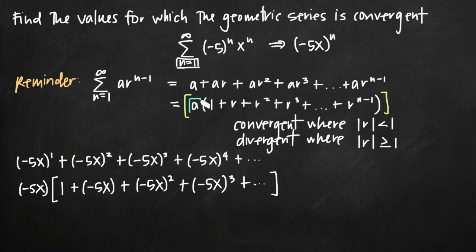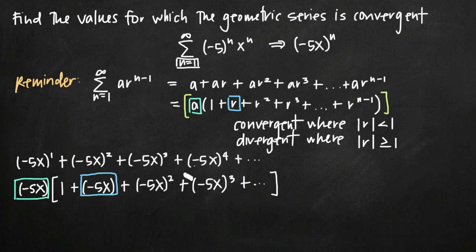So our value of a — the term we factored out — is negative 5x. The constant multiple r is also negative 5x, and we can see the subsequent terms are r squared, r cubed, r to the fourth, and so on. We've matched the geometric series form and we know both a and r, so we have everything needed to determine where the series is convergent.